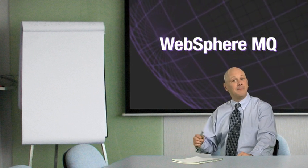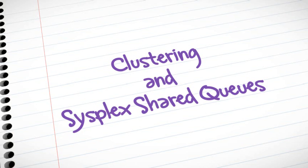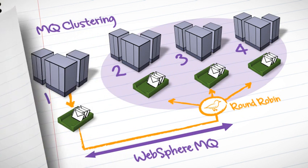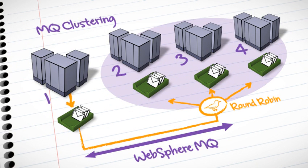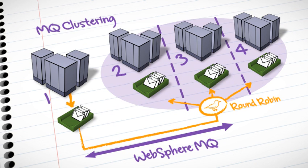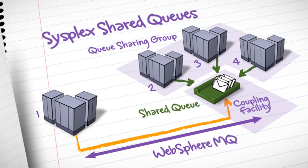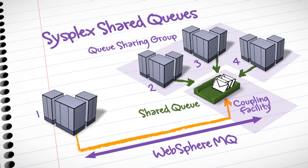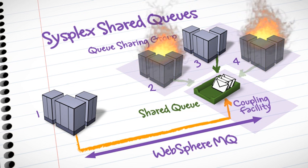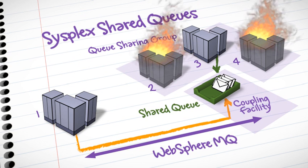WebSphere MQ provides complementary methods to provide high availability of message data: clustering and SysPlex shared queues. MQ clustering is a widely used platform-neutral technique for spreading messages seamlessly among multiple queue instances to support parallel processing. Since our service level agreements require the highest availability and throughput possible, we use SysPlex shared queues — an MQ capability unique to the ZOS environment. Message data can be accessed from any environment within a parallel SysPlex, independent of application or LPAR failures, and MQ Peer Recovery provides automatic resolution of in-flight message data failures.